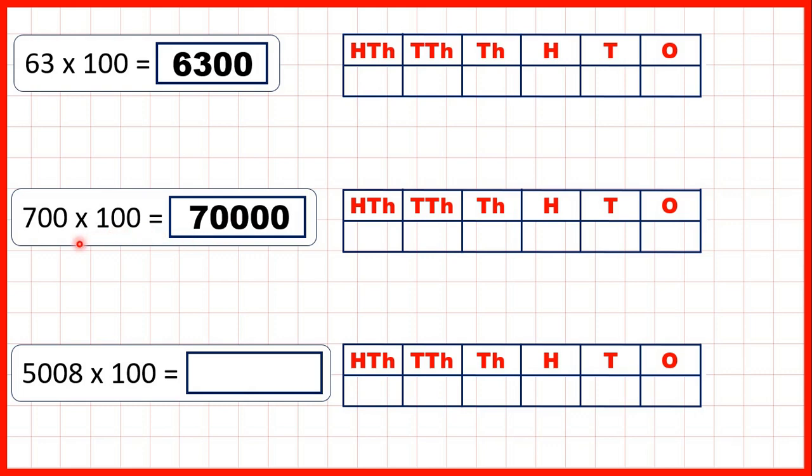You could also count that in this multiplication we have 1, 2, 3, 4 end zeros, and 7 times 1 is 7, so because we have 4 end zeros in our question, we need 1, 2, 3, 4 end zeros in our answer.